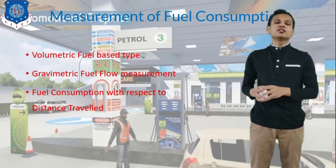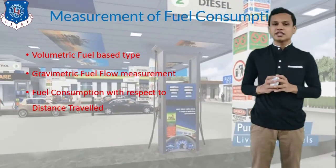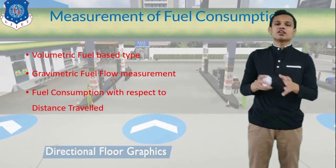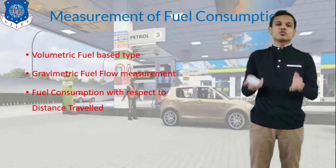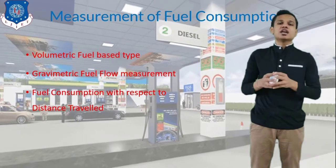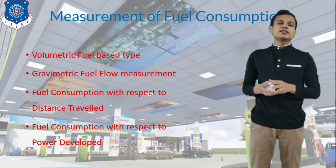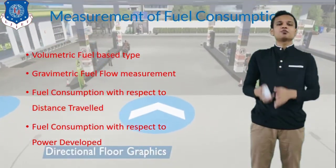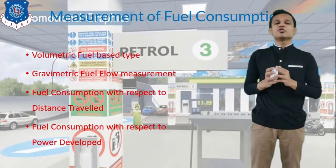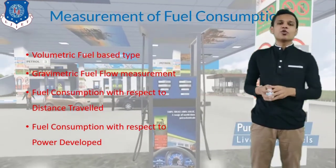The third method is fuel consumption based on the distance traveled by the vehicle, which gives you the vehicle's average in kilometers per liter — what a normal driver or vehicle owner wants to know. The fourth method is fuel consumption with respect to the power developed, where a simple MOS test is used to measure fuel consumption based on the brake power generated in the vehicle.